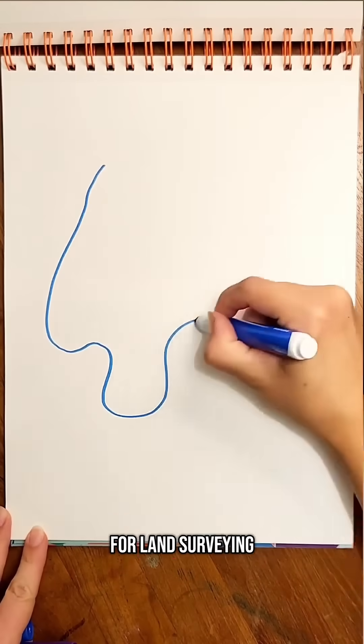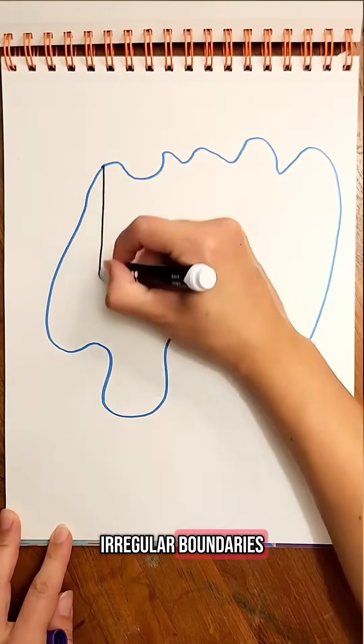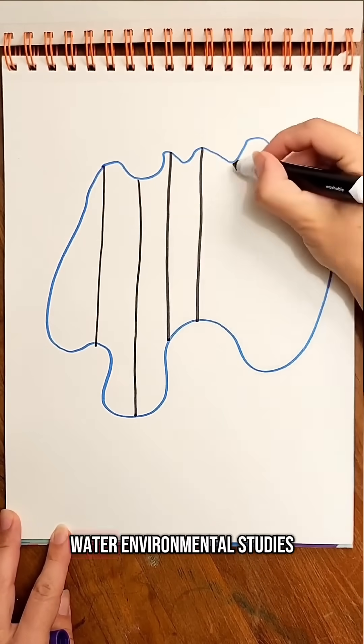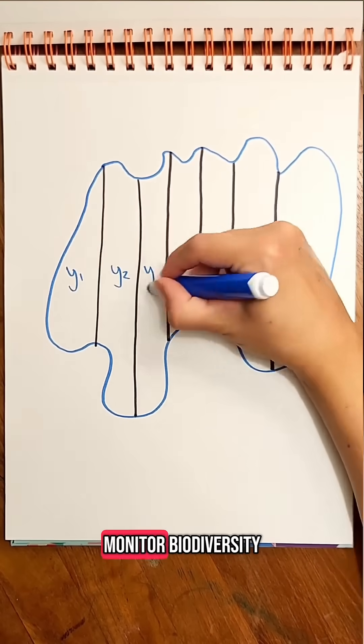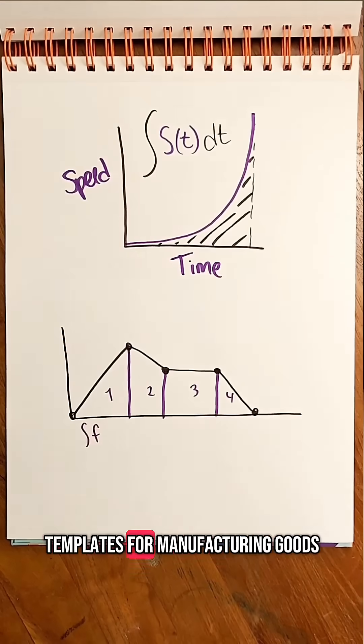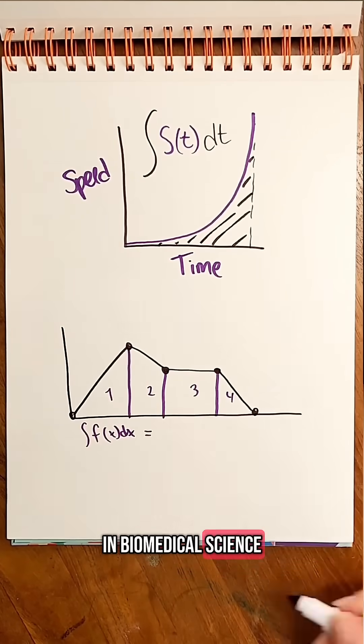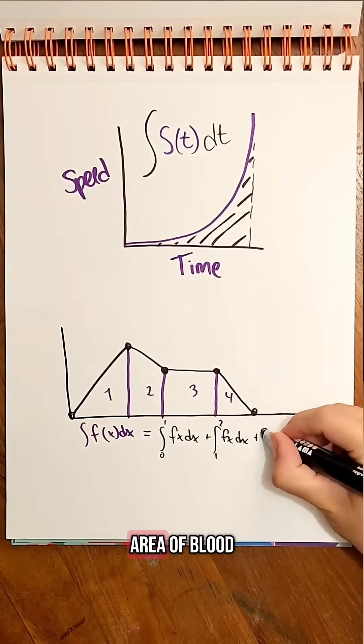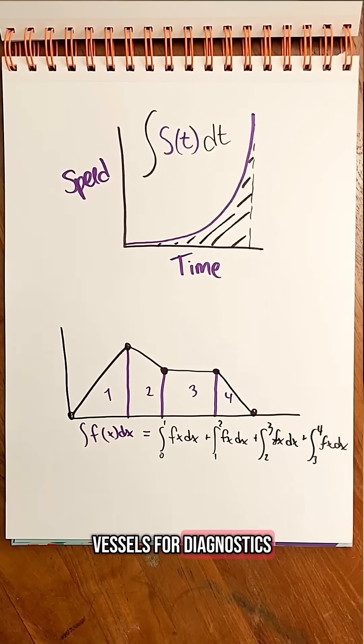In engineering, this is useful for land surveying of plots with irregular boundaries or bodies of water, environmental studies of habitats to monitor biodiversity, designing molds and templates for manufacturing goods, and biomedical science, calculating the interior area of blood vessels for diagnostics and treatment.